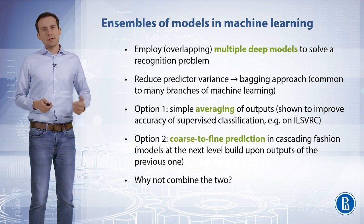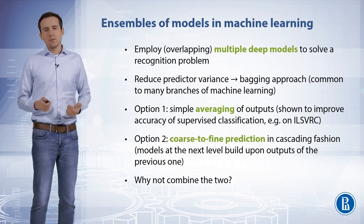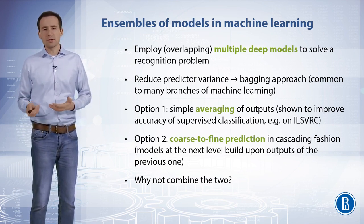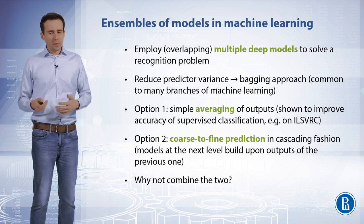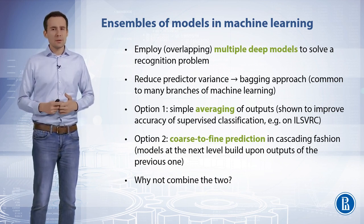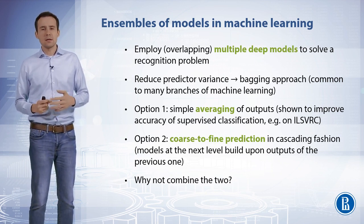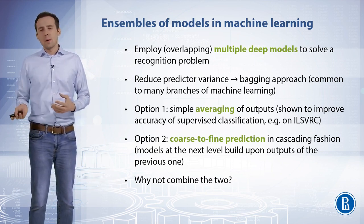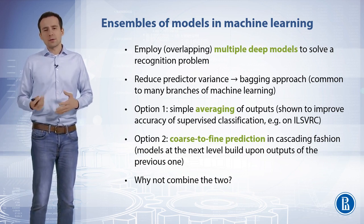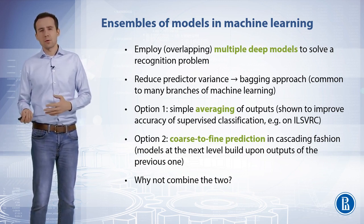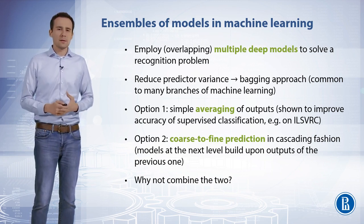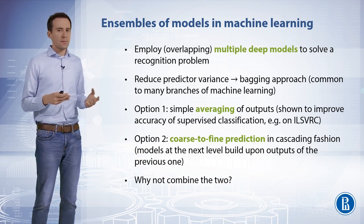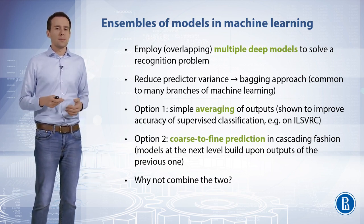We generally have a few options. One would be to train multiple models and do simple averaging of their outputs, which has been shown to improve accuracy of supervised classification — for instance on the ImageNet challenge. A different option would be to perform coarse-to-fine prediction in a cascading fashion, such that models at the next level build upon outputs of the previous level.